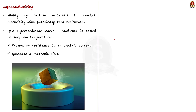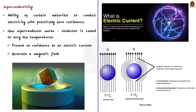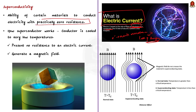Let us have a basic understanding. What is electric current? A current is nothing but the movement of charged particles, usually electrons, in a particular direction. When the electrons move, they collide and interact with other atoms in the material, creating resistance. This resistance involves a loss of energy, mostly in the form of heat. But in superconductors, the electrical resistivity drops to virtually zero. Superconductivity is the ability of certain materials to conduct electricity with practically zero resistance.